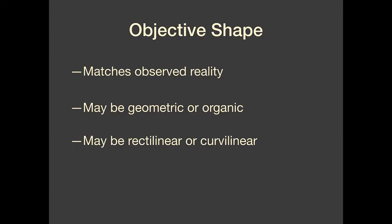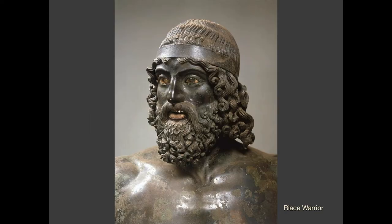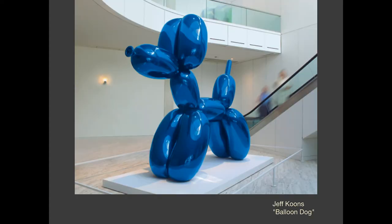The final category is objective versus abstract versus non-objective shape. When we talk about objective shape, what we're talking about is that it matches observed reality. We look at the shape and we say, yeah, that looks like something — that looks like a cat or that looks like a car. The Riace warrior matches observed reality for the most part; we can tell this is meant to be a human being and it's fairly realistic. Jeff Koons' Balloon Dog — same thing. I know exactly what that is, and it is considered to be an objective shape.